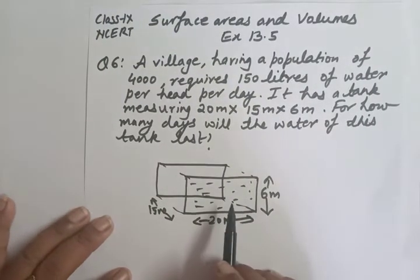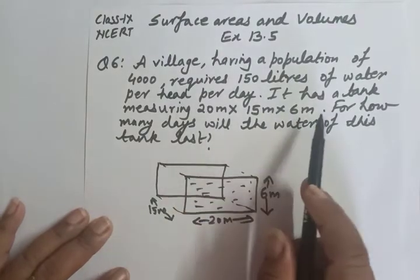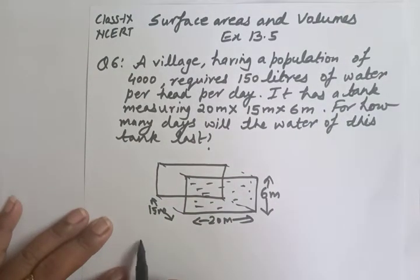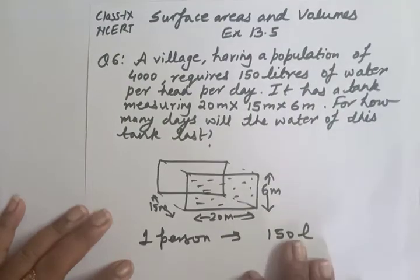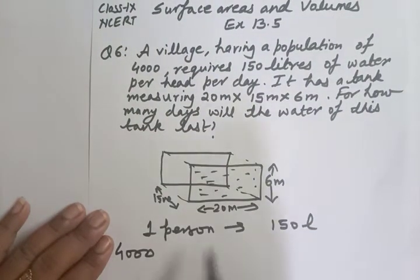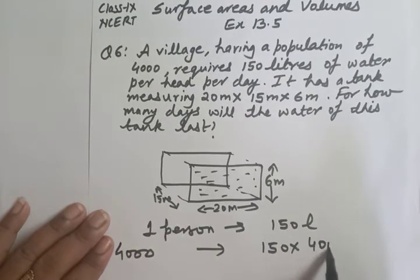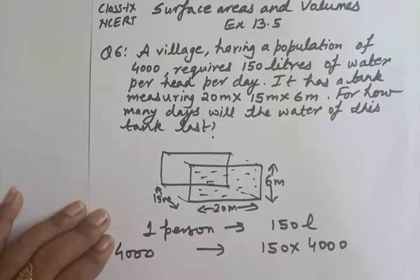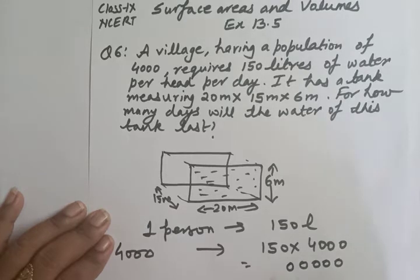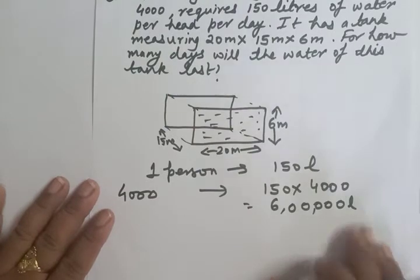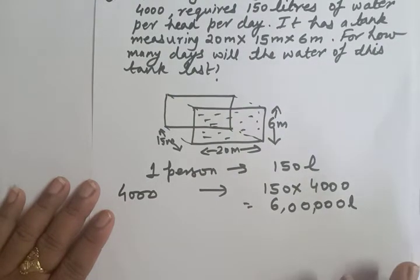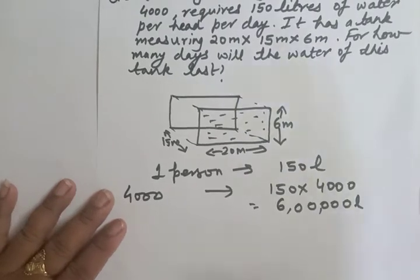According to the information given, for one person, 150 liters of water is required. For 4000 people, that is 150 × 4000 = 6 lakh liters. So 6 lakh liters of water is required for the entire village population for one day.